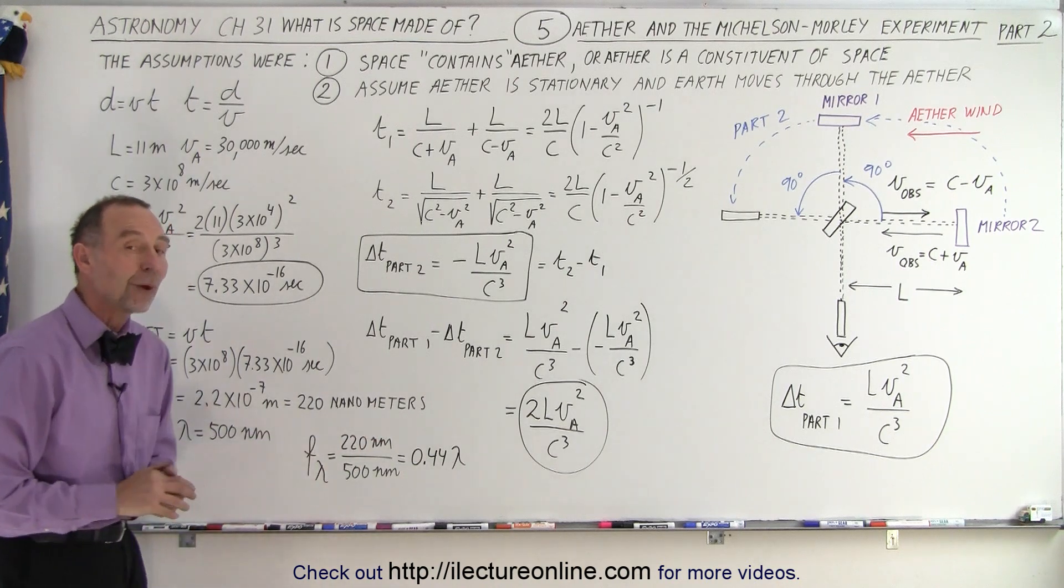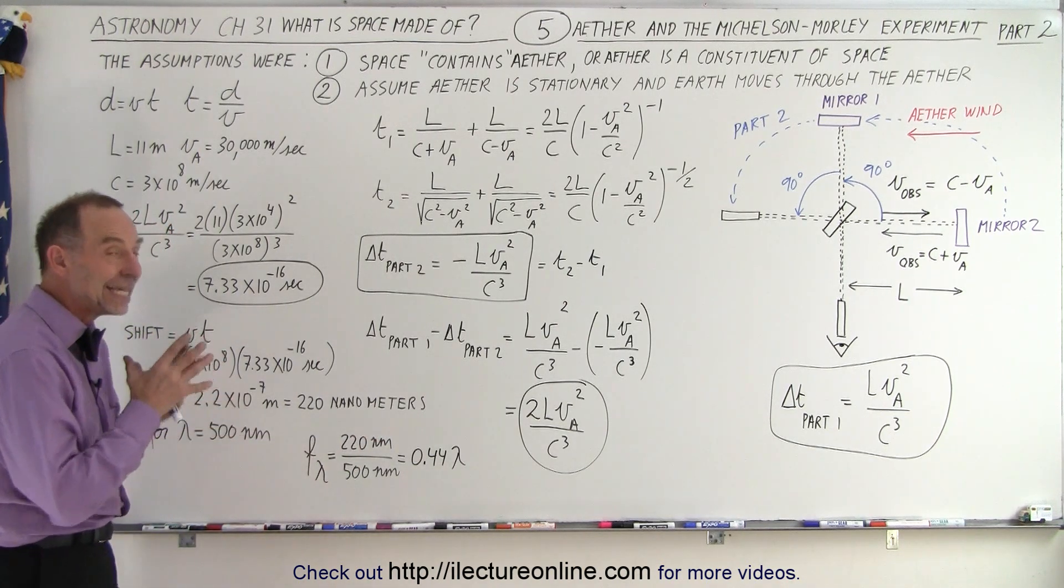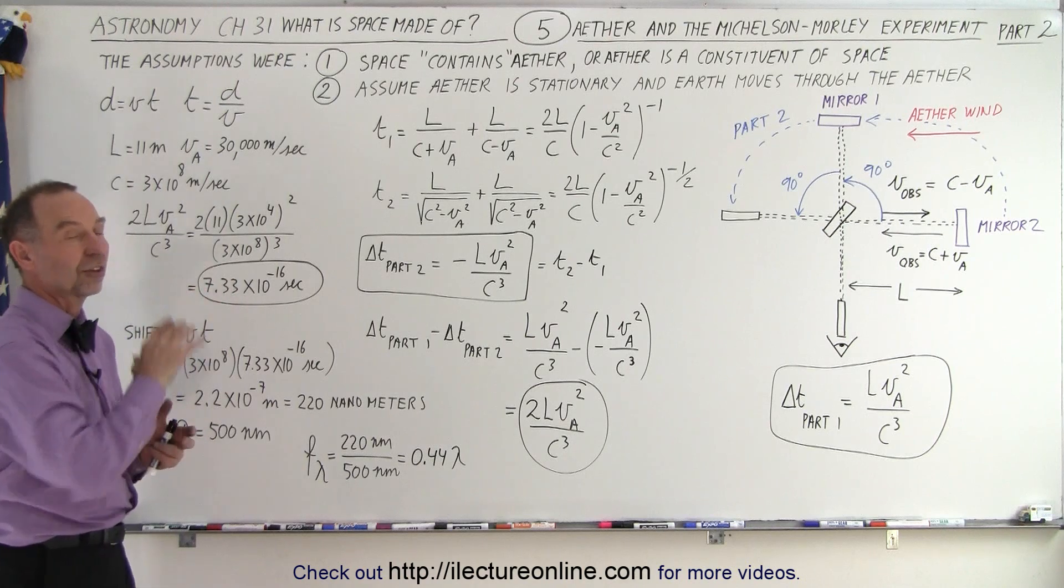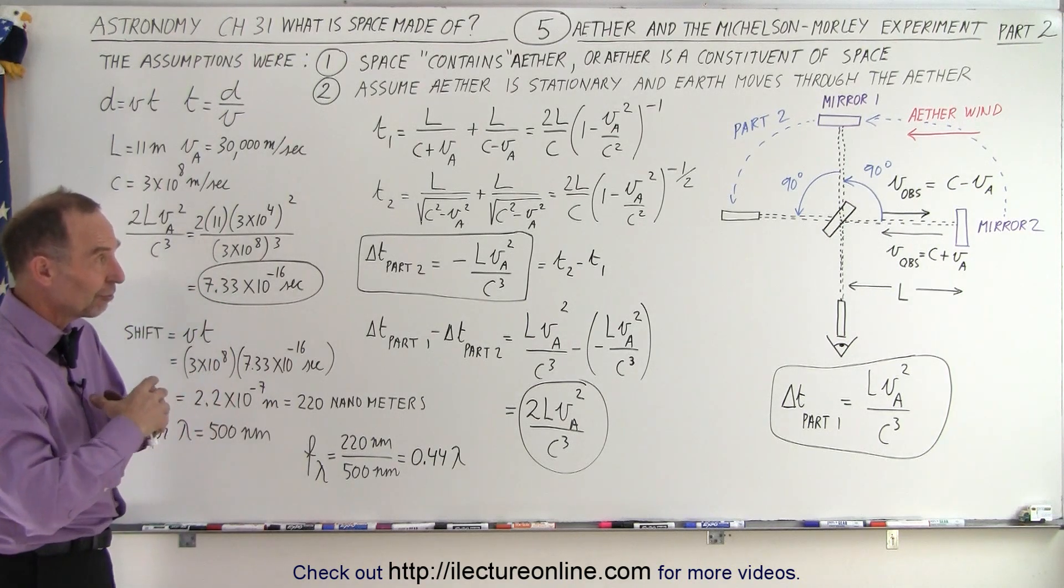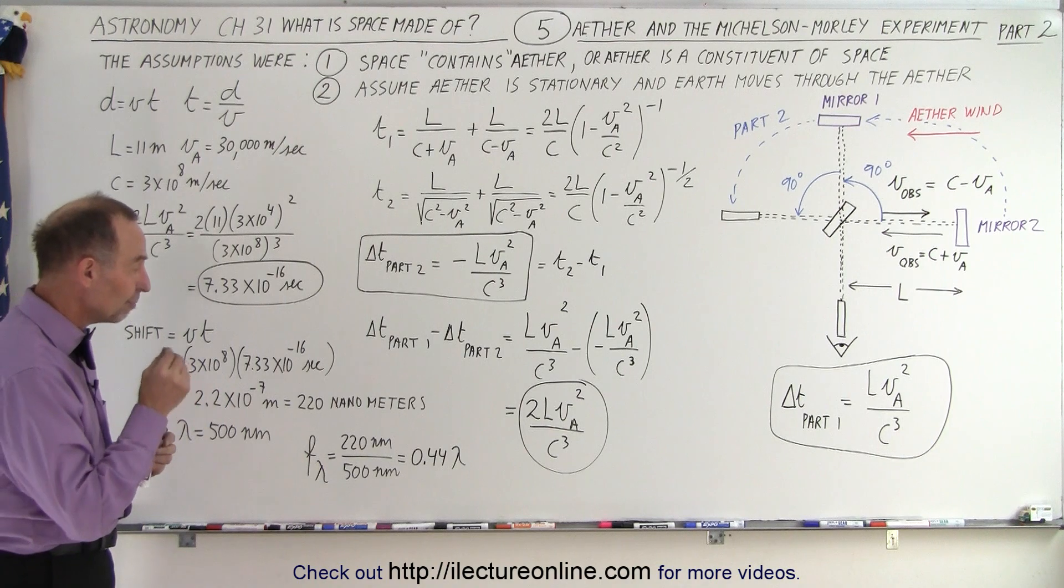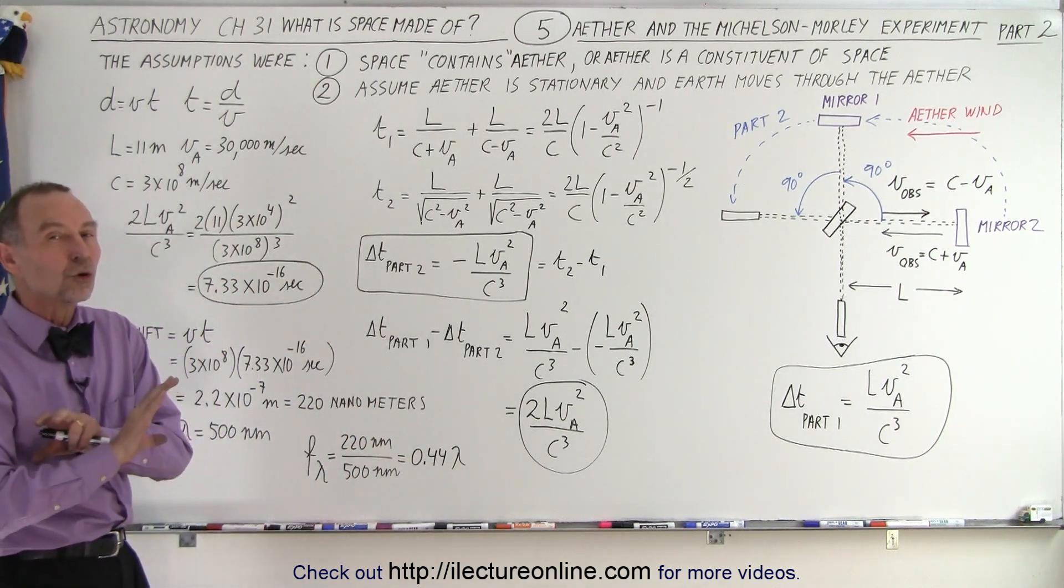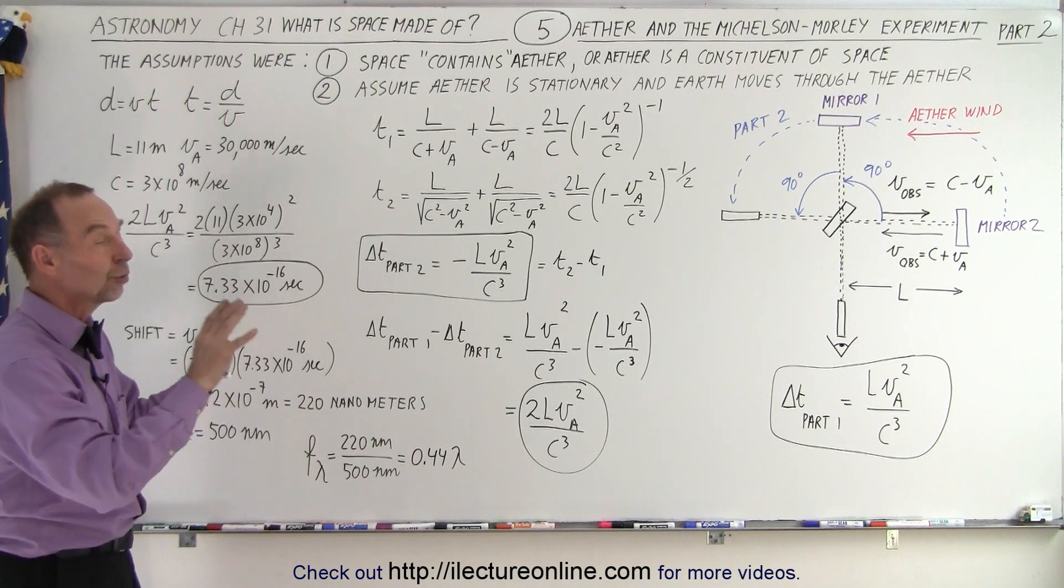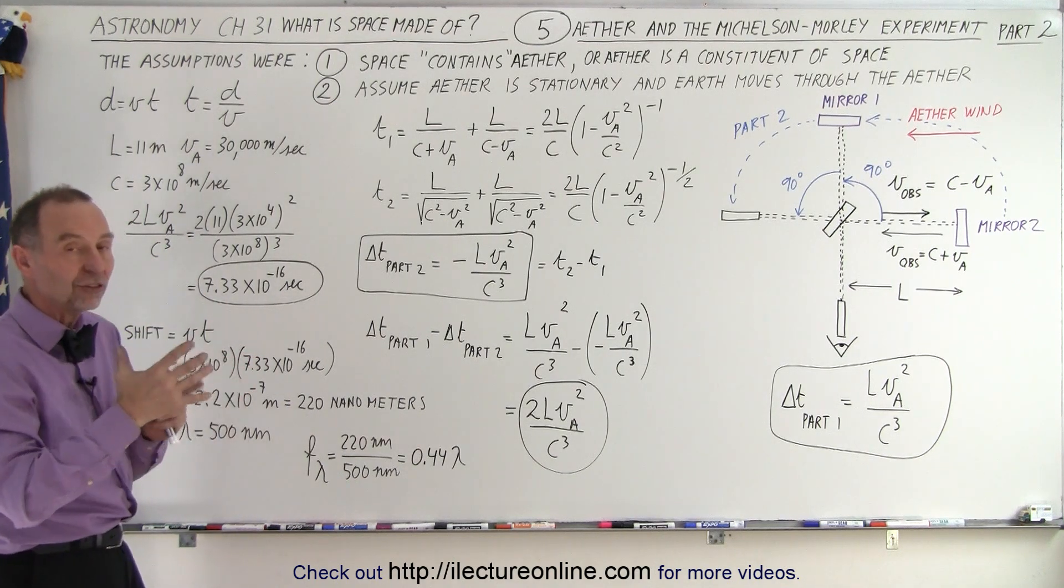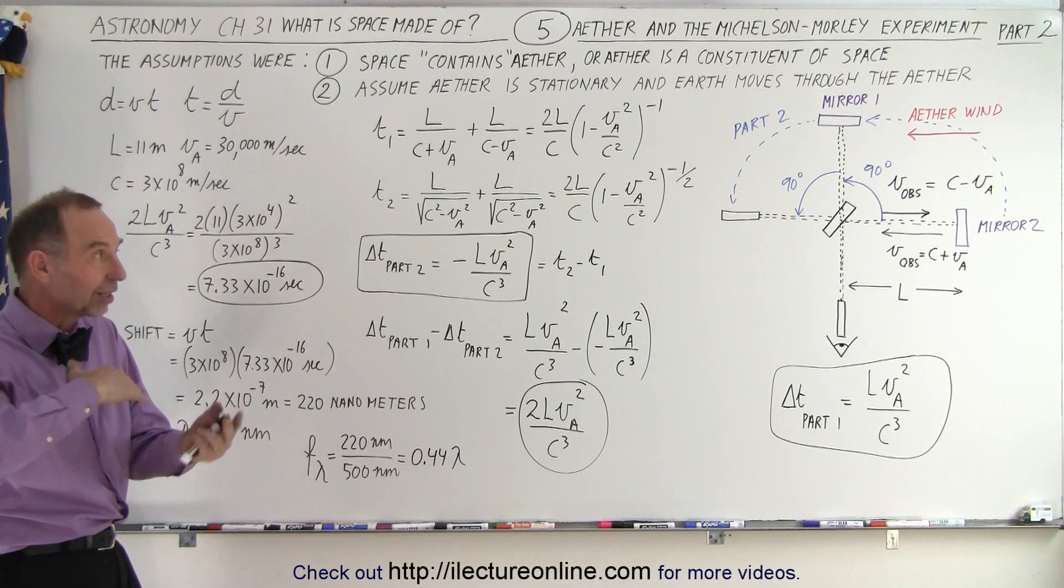Now the shift of 220 nanometers relative to the wavelength of light of about 500 nanometers, that is about 0.44 of a wavelength. That should have been easily discovered through this experiment. Mickelson's interferometer was very accurate. It could measure accuracies to about 1/100th of a wavelength.